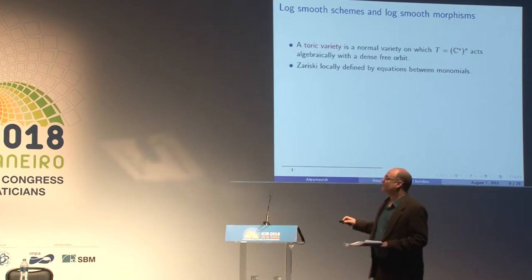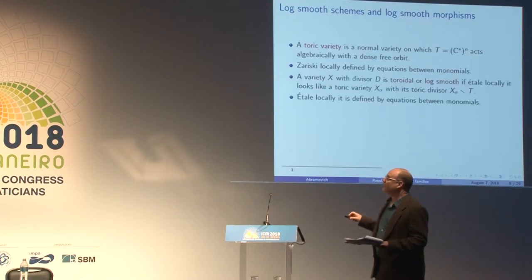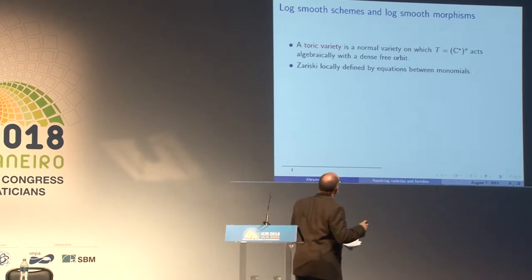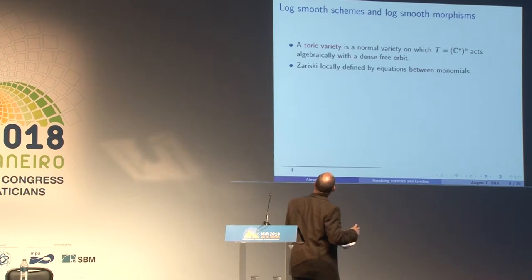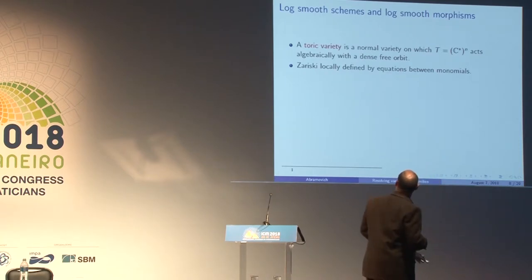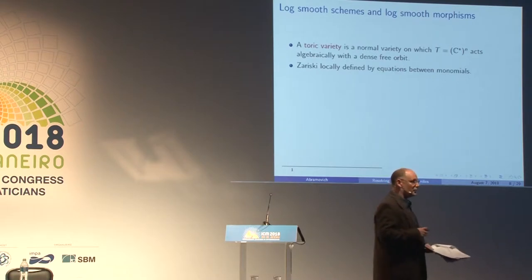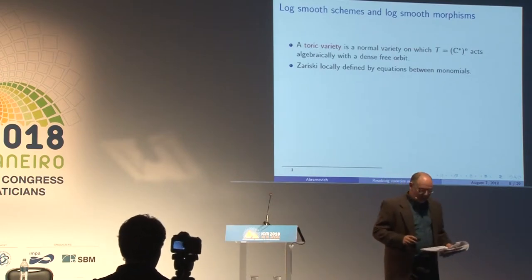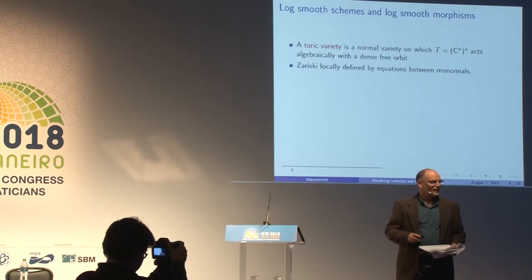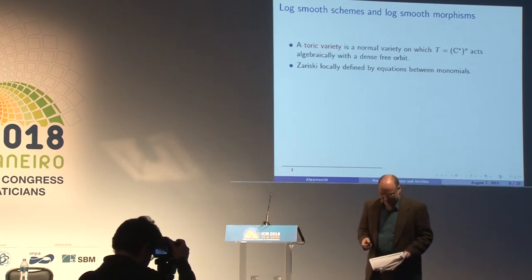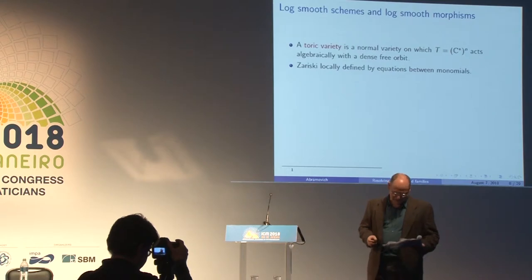Let's recall: a toric variety is a normal variety on which C* to the n acts algebraically with a dense free orbit. A toric variety is characterized by being a normal variety locally defined by binomial equations. The issue is that all of these are rational, so they don't seem to say something about arbitrary varieties. But there's what I like to call the unreasonable effectiveness of toric varieties.